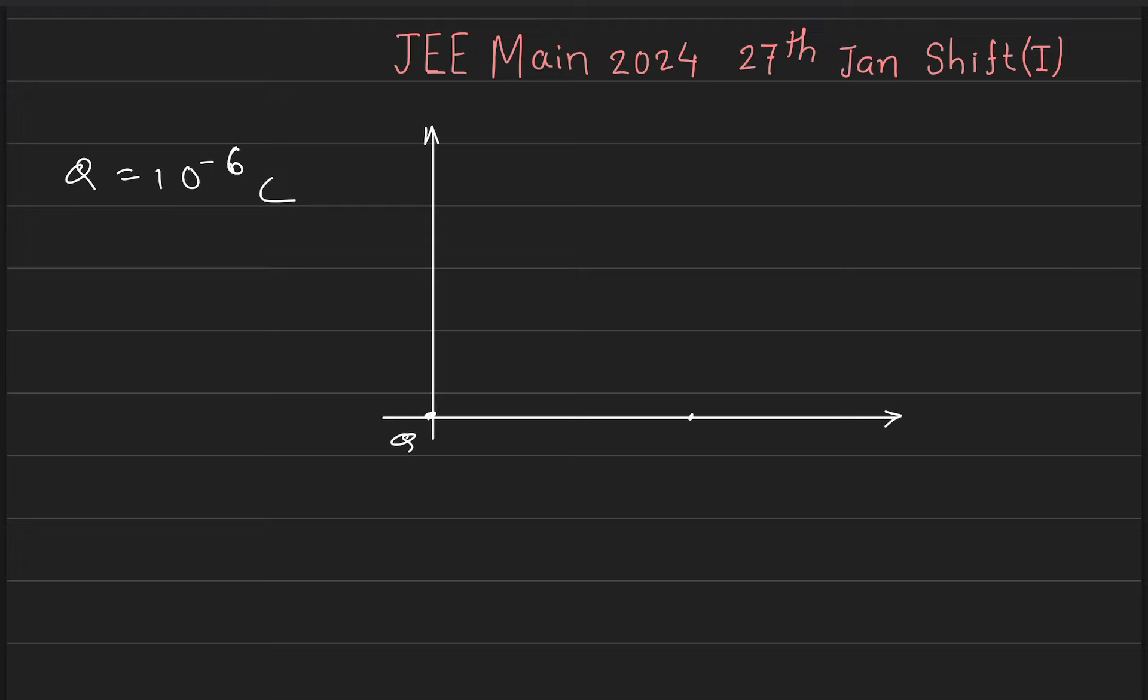One point is Q at root 6 comma 0, and the other point is P which is root 3 comma root 3.